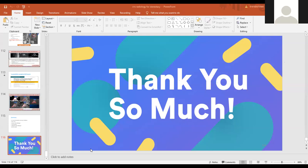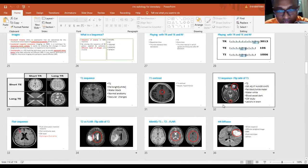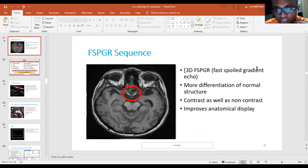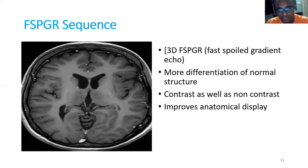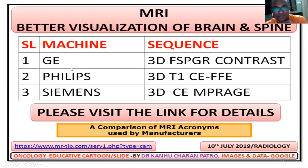Question about the 3D FSPGR sequence: it is a fast spoiled gradient echo sequence. You should ask for the 3D version, not the simple 2D version — they will give axial as well as sagittal and coronal reconstructions. You cannot differentiate cranial nerves and optic chiasm on standard T1 and T2 sequences, but with 3D FSPGR sequence the optic chiasm is clearly visible. Remember that the name differs by company — always ask the radiologist which machine company they have and request accordingly.